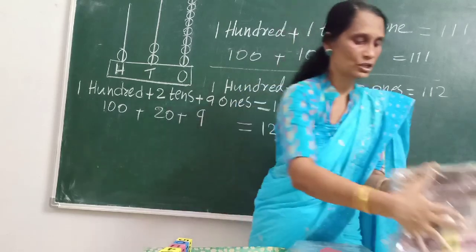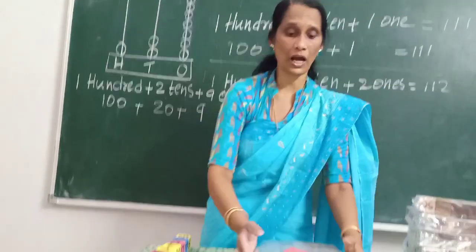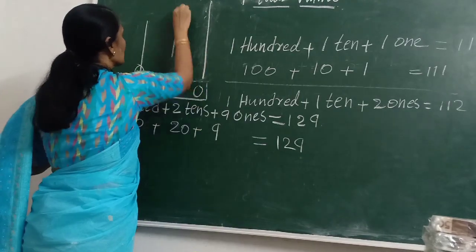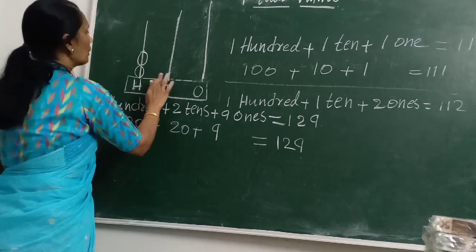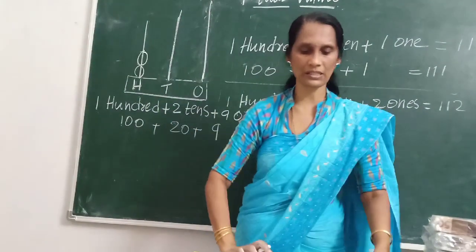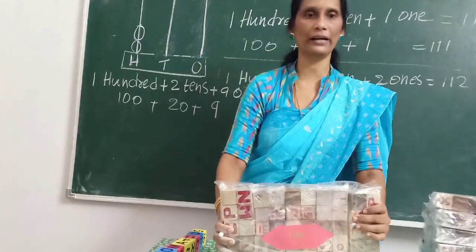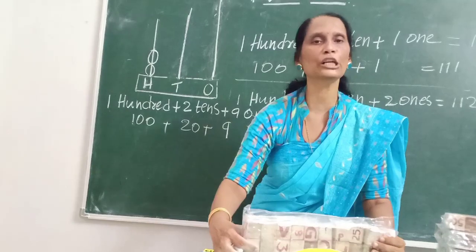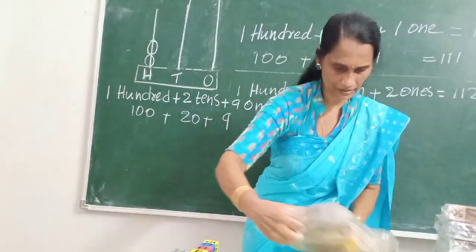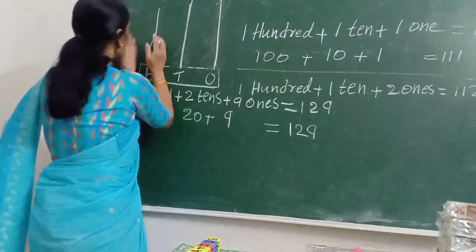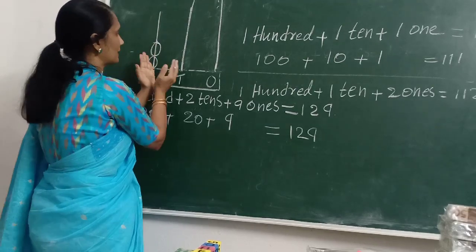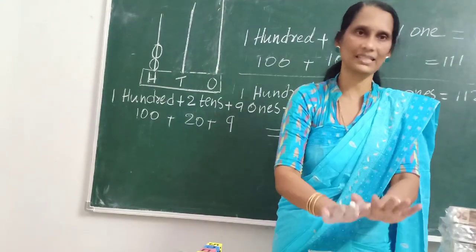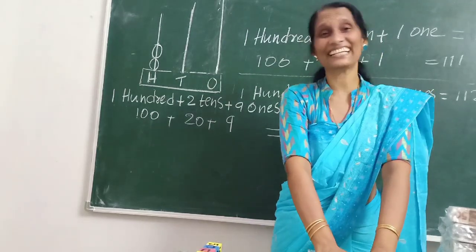Instead of the previous arrangement, we get 200 — 2 bits, 2 single blocks of 100. We will represent 200 in this manner. Like that we can make 300, 400, 500, 600, 700, 800, 900.